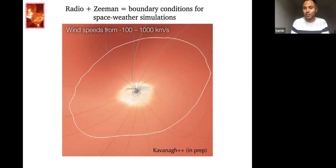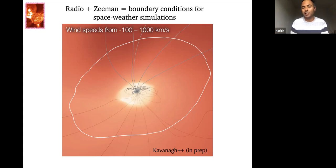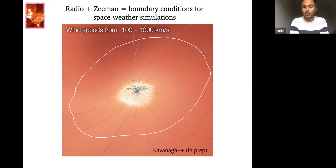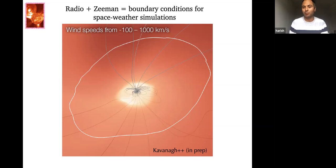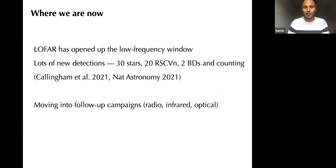This matters because the stellar wind — which we believe exists on other stars too — depends not just on the magnetic field but on the coronal structure. If you can work out how large the closed field region is, you can put that into stellar wind simulations and say what kind of environment the exoplanets around these stars are experiencing. A student at Leiden is doing exactly this — using our radio-derived constraints to model the wind pressure that planets around this type of star should expect.